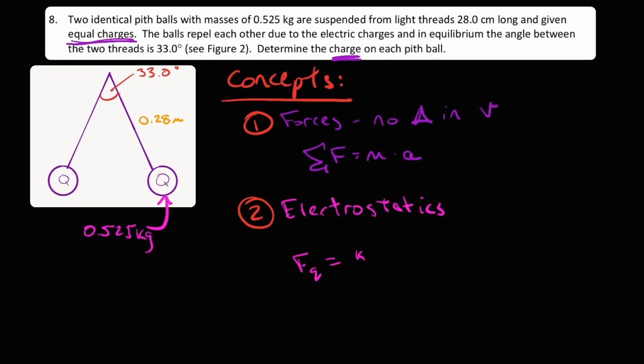Times charges Q sub 1 and Q sub 2, divided by the distance R squared, which if we look at our figure 2 here, it is the distance between the two pith balls.